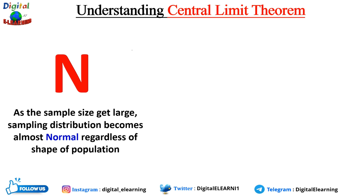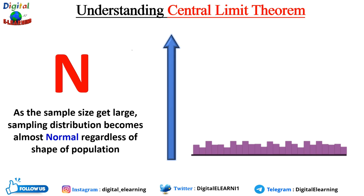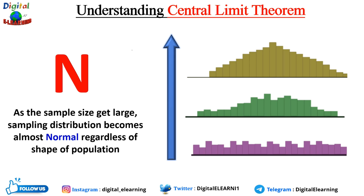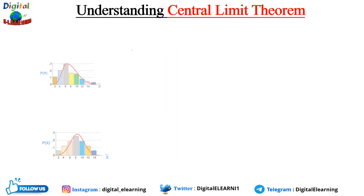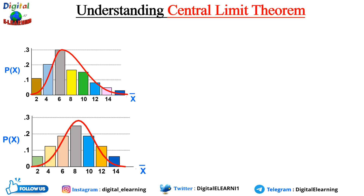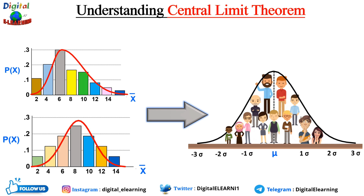As the sample size gets large, the sampling distribution becomes almost normal regardless of the shape of the population. So whether your population distribution is flat, bimodal, unimodal, Poisson, or follows any kind of distribution, if you take a large enough sample from that population, the end result will always be a normal distribution.